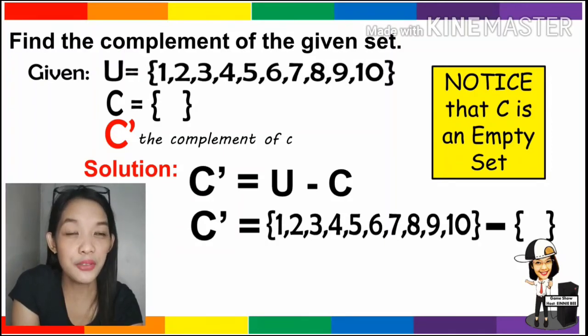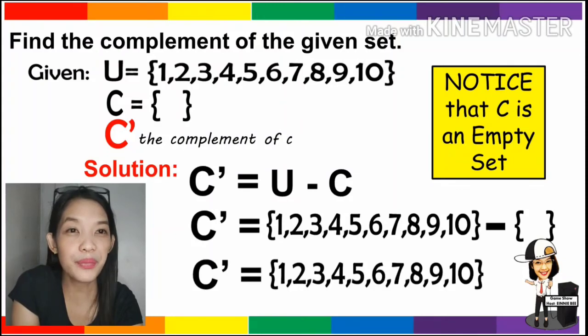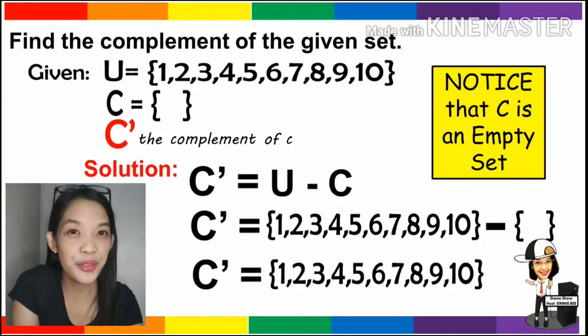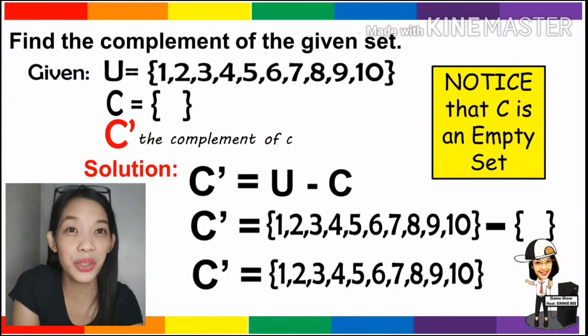We cannot remove any elements. And therefore, the complement of C will be 1, 2, 3, 4, 5, 6, 7, 8, 9, and 10, which is also equivalent to our universal set.